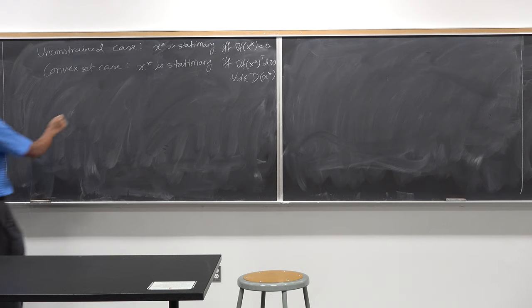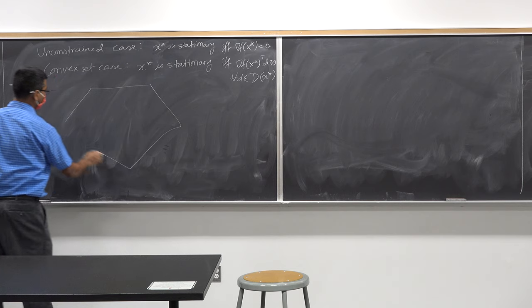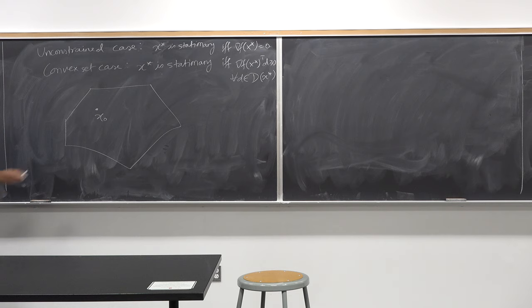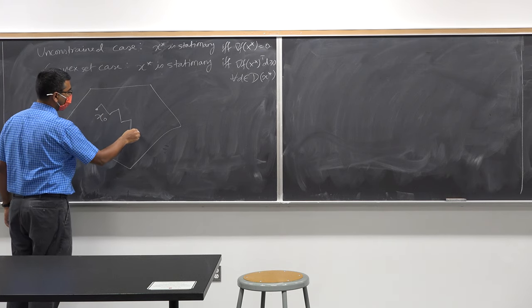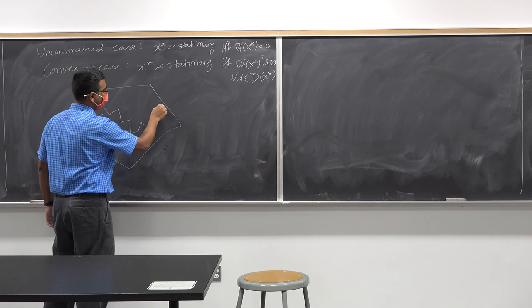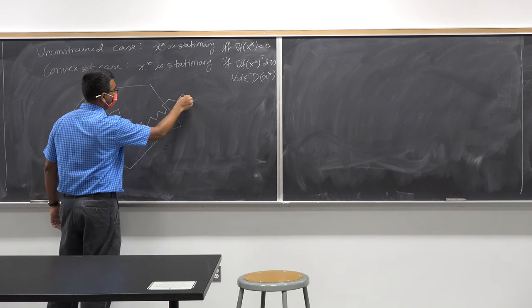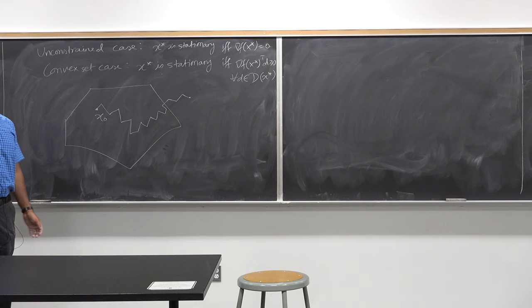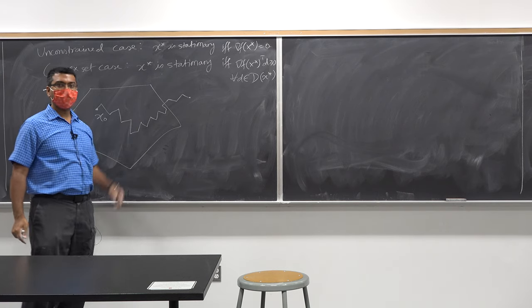Here is the problem. I am in a convex set. I start from some point x₀ within the set and apply the vanilla gradient descent algorithm. I move along in the set trying to get to the stationary point. And then suddenly I start going outside the set. What should I do at the point where I am going outside the set?